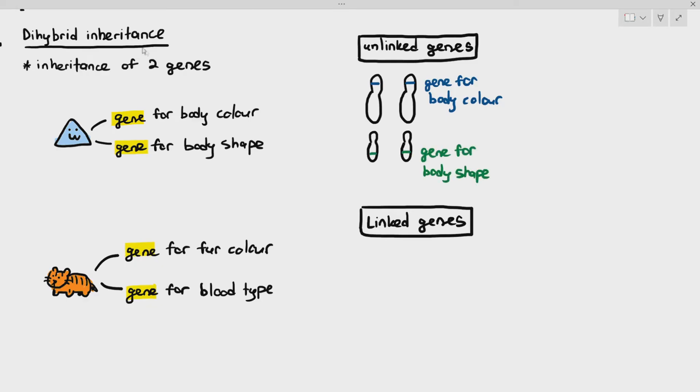If you notice, the gene for body color is located in one chromosome and the gene for body shape is located in a separate chromosome. When the two genes are located on different chromosomes, we call it unlinked genes.